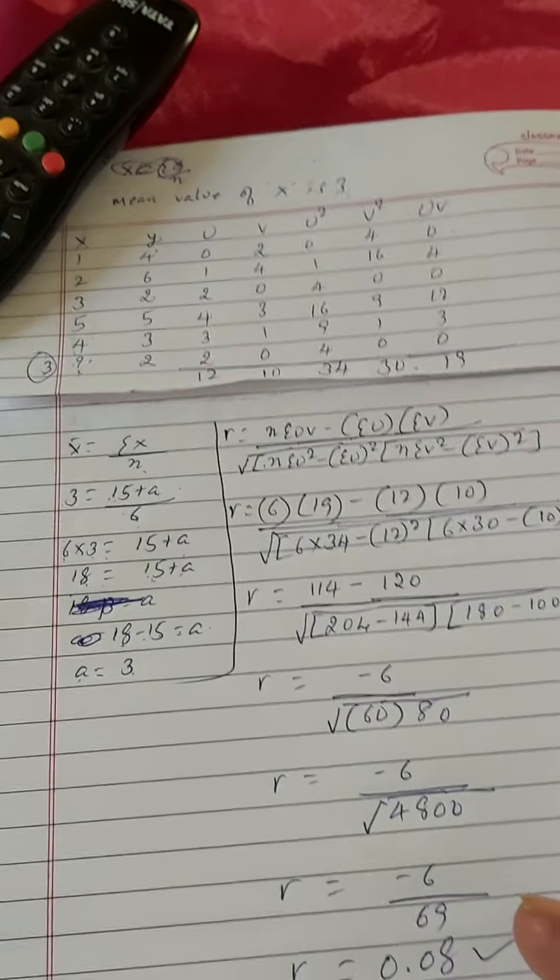As usual we have to calculate Karl Pearson's coefficient of correlation. For that we have to apply this formula only. Already you have solved number of problems by application of this formula. So r is equal to... remaining work you have to do the same. You have to take u, you have to take v, u square, v square and uv, everything is same. After making these totals, after applying this formula, we get the final answer of 0.08. So up to here I have explained how to calculate the missing value.